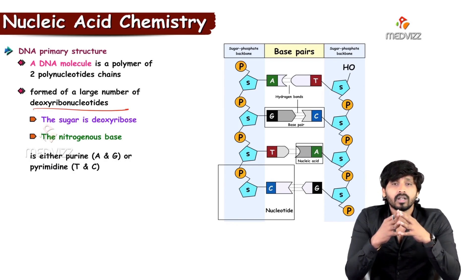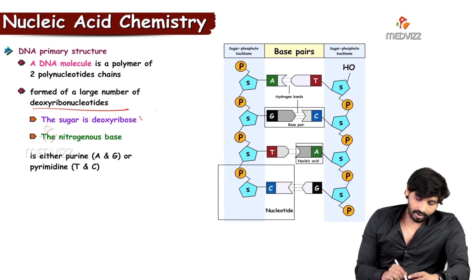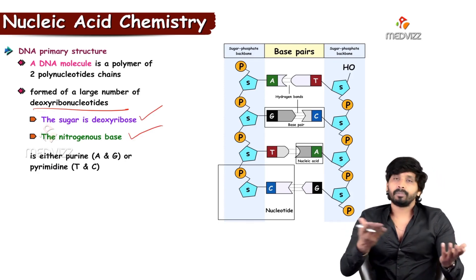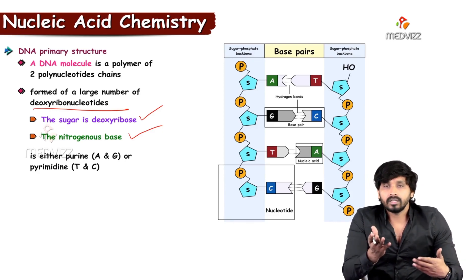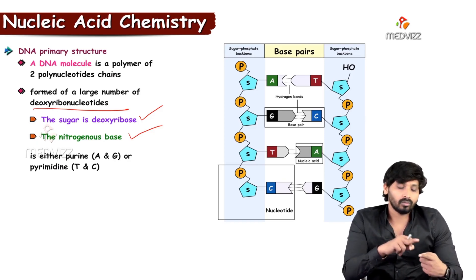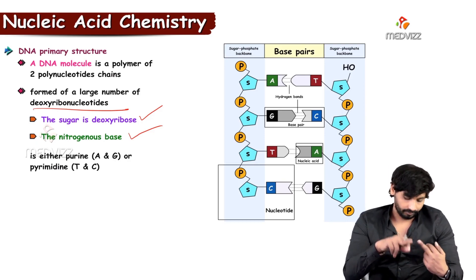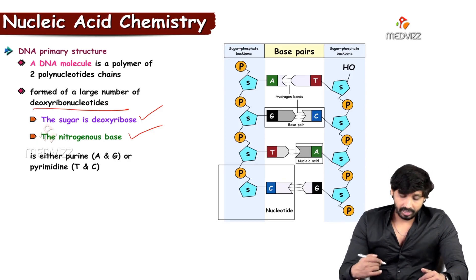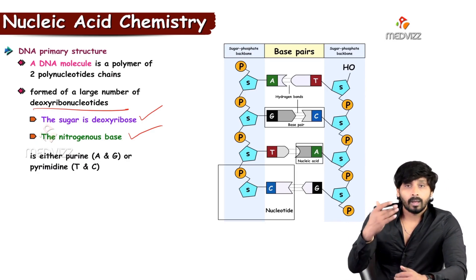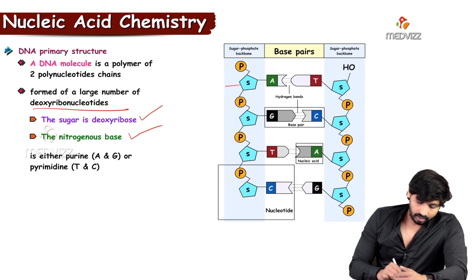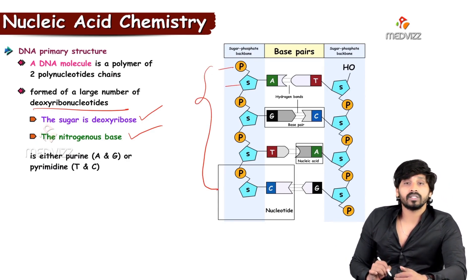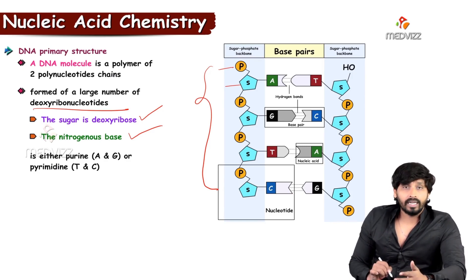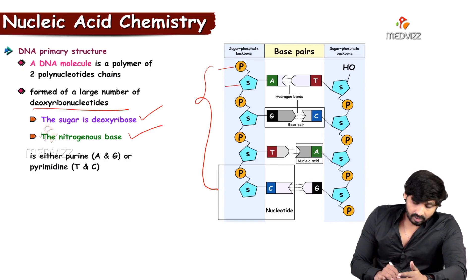The sugar in DNA is deoxyribose. The nitrogen bases include purines — adenine and guanine — and pyrimidines. Although there are three pyrimidines, DNA only has two: thymine and cytosine. Looking at the picture, the backbone is formed by the sugar and phosphate groups — all the sugars and phosphates make up the backbone of the DNA, connected by phosphodiester linkage.